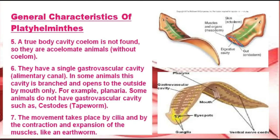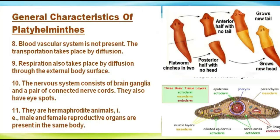Movement takes place by cilia and by contractions and expansions of muscles, like an earthworm. A blood vascular system is not present; transportation takes place mostly by diffusion. Respiration also takes place by diffusion through the external body surface. The nervous system consists of a brain, ganglia, and a pair of connected nerve cords.